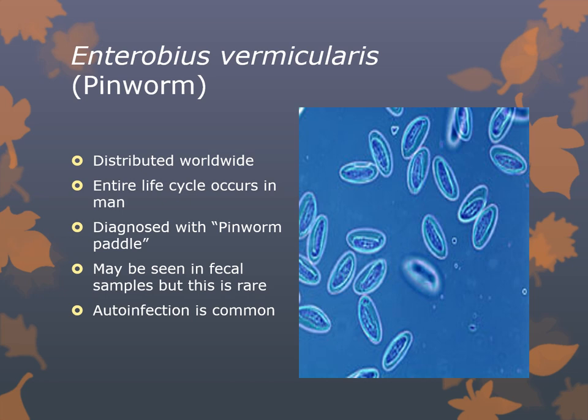Let's look at each specific type of roundworm. You need to know the scientific and common names. First is Enterobius vermicularis, also known as the pinworm. This is the most common roundworm in the United States, with about 20 to 40 million people infected at any given time. It is distributed worldwide and the entire life cycle occurs in man — it is not found in other animals. It is usually diagnosed with the pinworm paddle, a sticky paddle touched to the anus to pick up ova, which are then viewed microscopically.